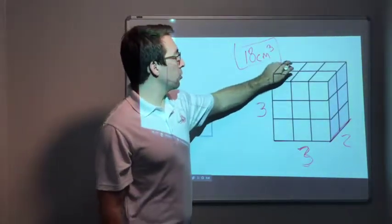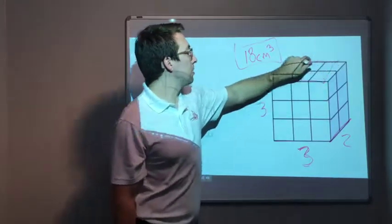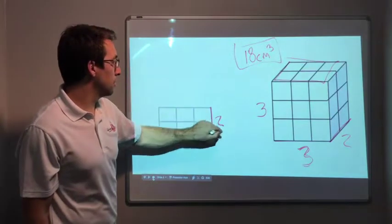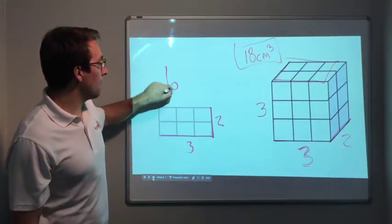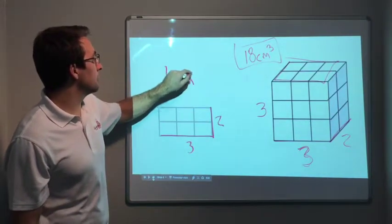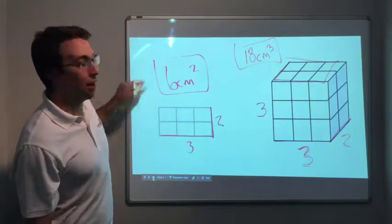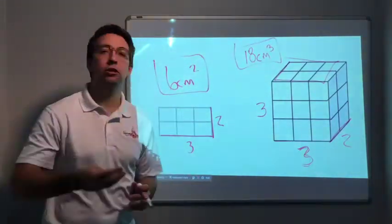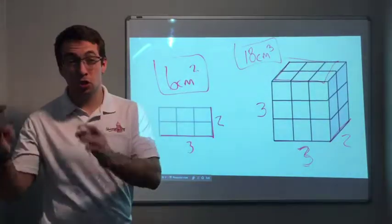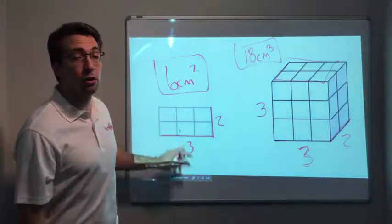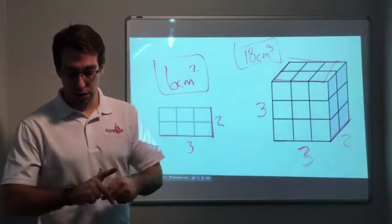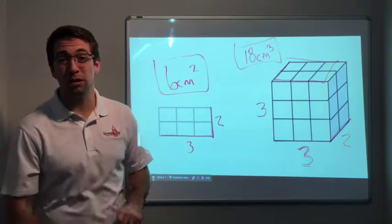But look. 6 cubes. 3 wide and 2 deep. 3 wide and 2 deep. The area is 6 centimeters squared. That is our area. Guys, the difference between area and volume is 2 dimension versus 3 dimension. Cubed versus squared. Area is squared. Volume is cubed. That's the difference. It's just how many dimensions are you dealing with.